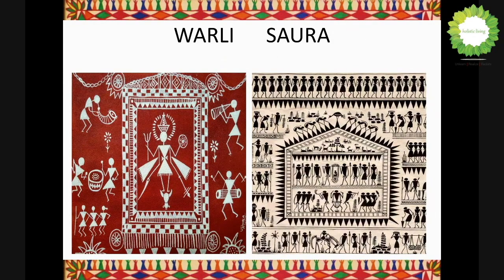Warli is all about geometric shapes — just two triangles for the body, two lines for the hands, two lines for the legs, and a circle at the center for the head. There are no expressions — no mouth, nose, or eyes. It is a simple art form representing their day-to-day lifestyle to future generations very clearly.